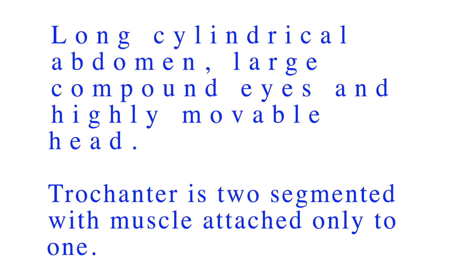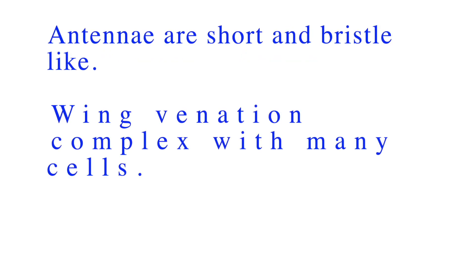The legs of Odonates have two segmented trochanters, with muscle attached only to one. Other insects have a single trochanter — a leg segment located between the coxa and femur. Antennae are short and bristle-like.